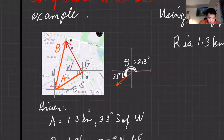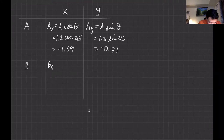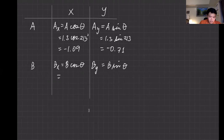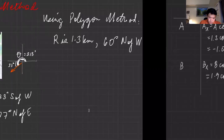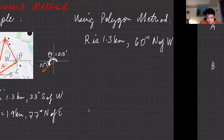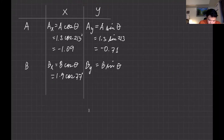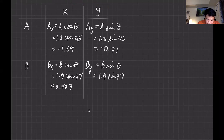For Bx, the formula is B cosine theta; for By, it's B sine theta. B is 1.9 kilometers and the direction is 77 degrees north of east — that's measured directly from the positive x-axis so the angle is 77 degrees. Bx = 1.9 cosine 77 = 0.427, and By = 1.9 sine 77 = 1.85.